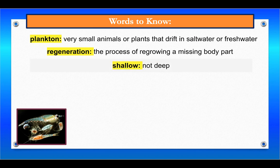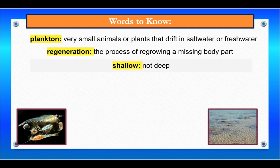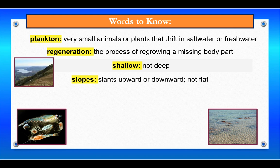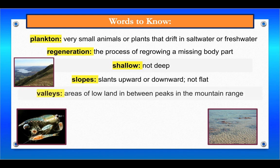Then we have the word shallow, which means not deep. For example, he swam in the shallow end of the pool because he was just learning how to swim. Slopes are slants, upward or downward, not flat. For example, a hill that slopes downward is good for sledding.